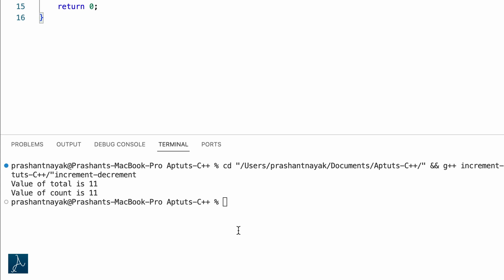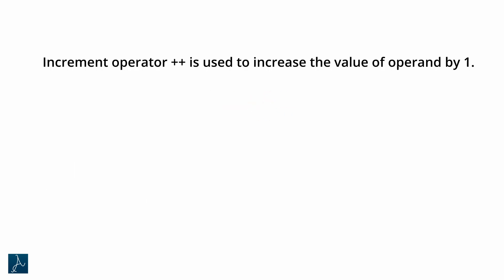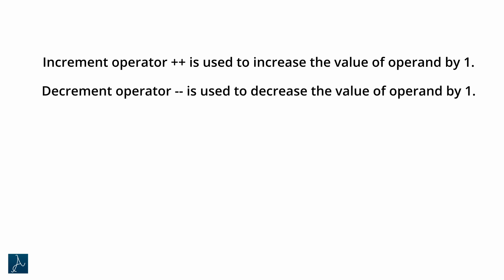This same principle applies to the minus minus decrement operator as well — try it out and let me know in the comment section. Let's summarize what you have learned in this video. The increment operator plus plus is used to increment the value of the operand by 1. The decrement operator minus minus is used to decrease the value of the operand by 1.